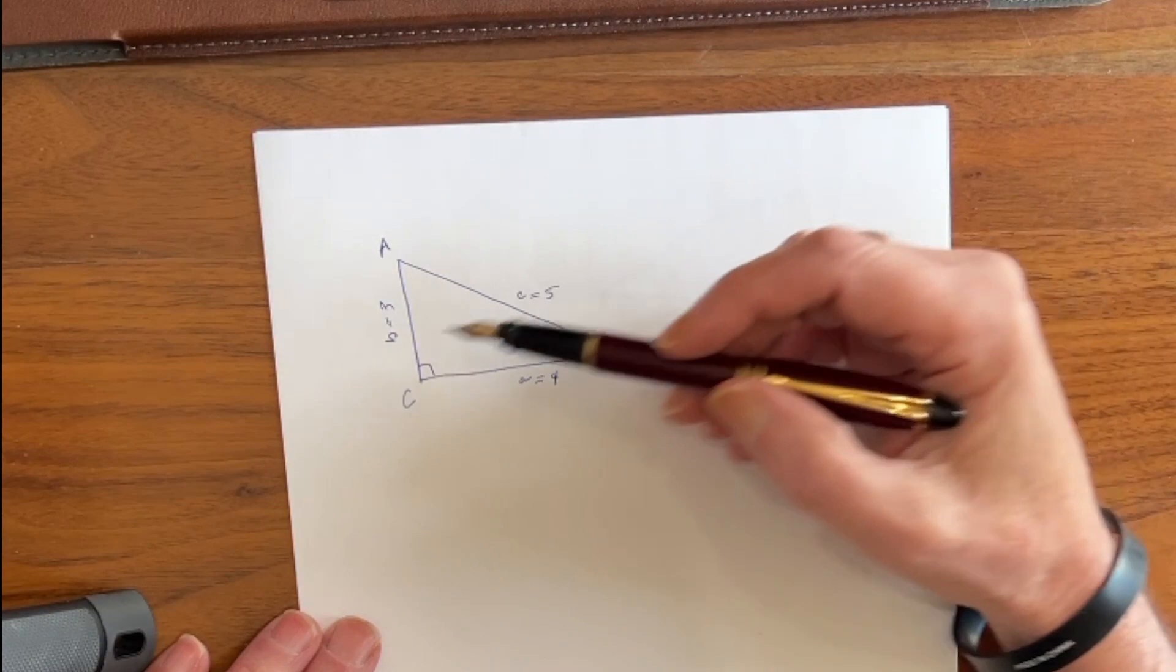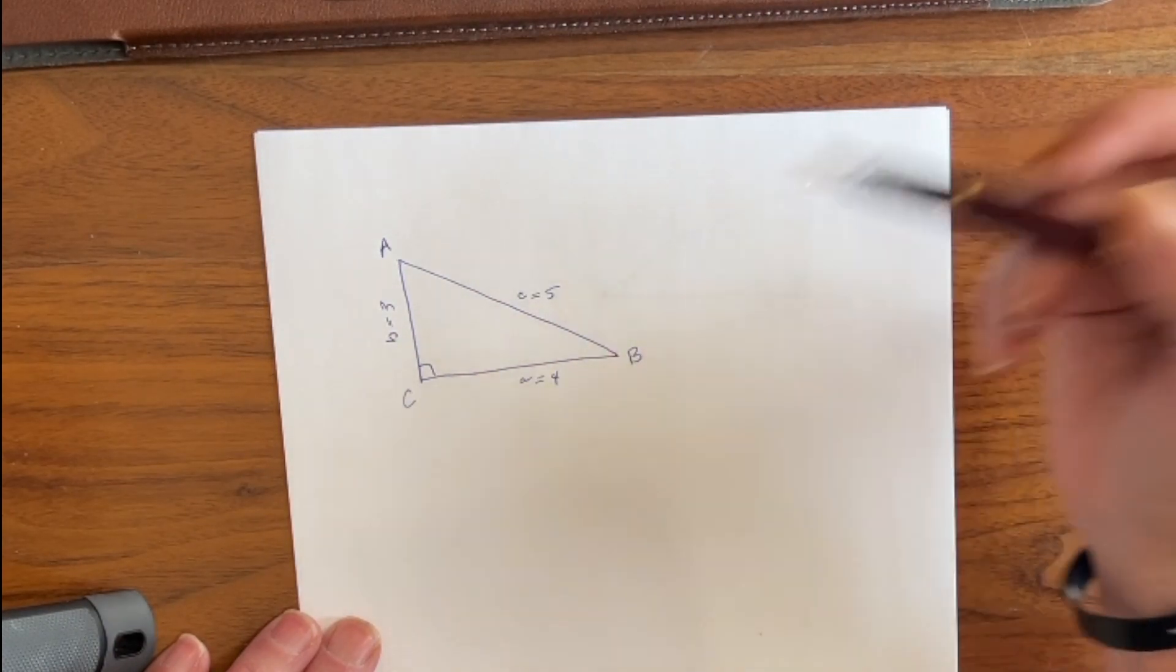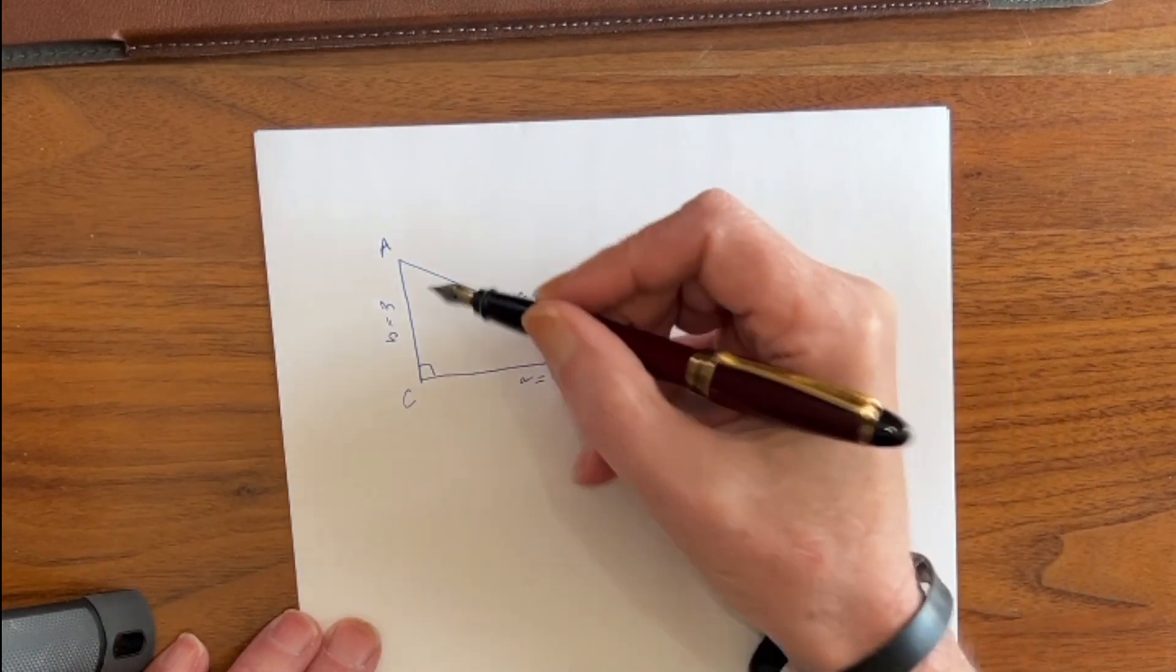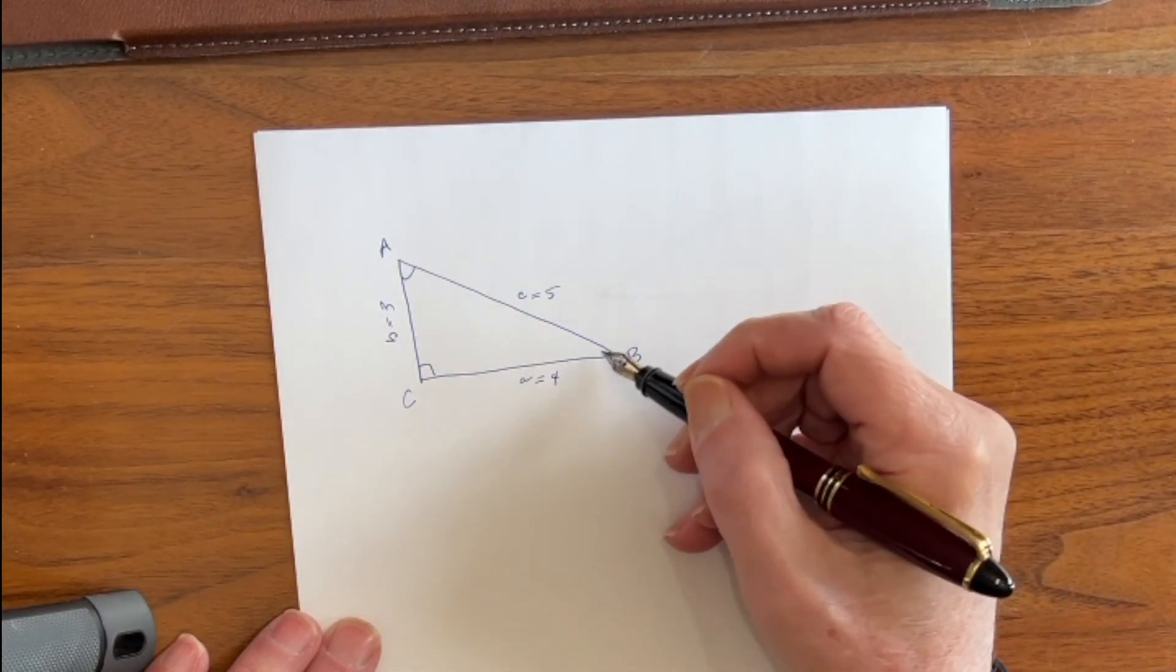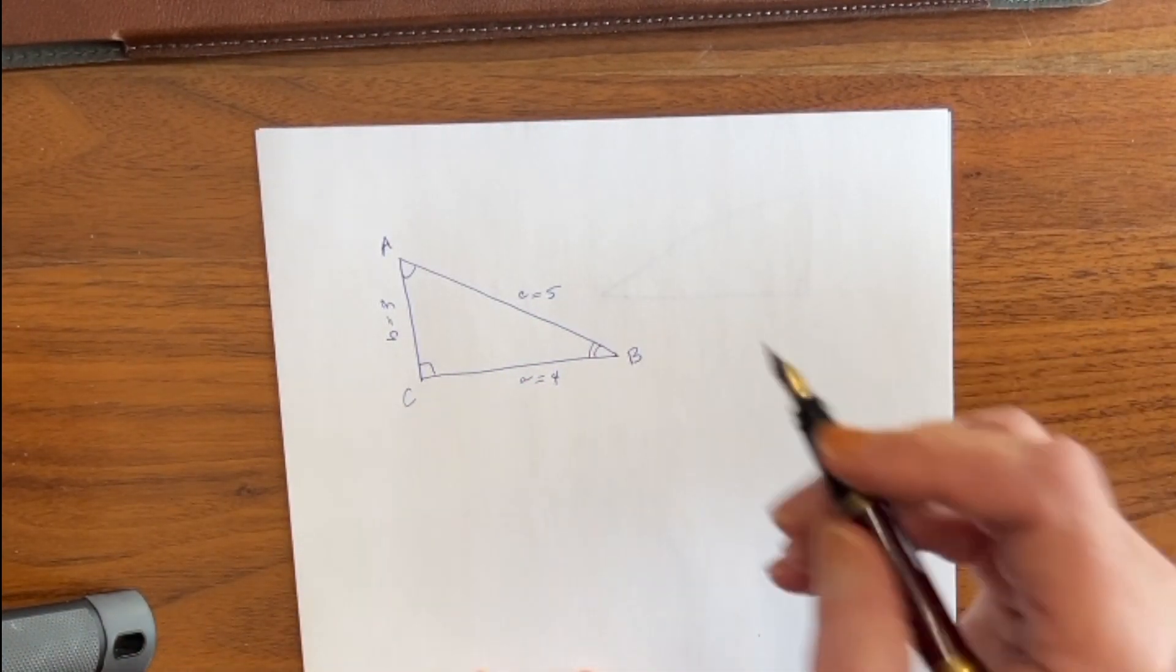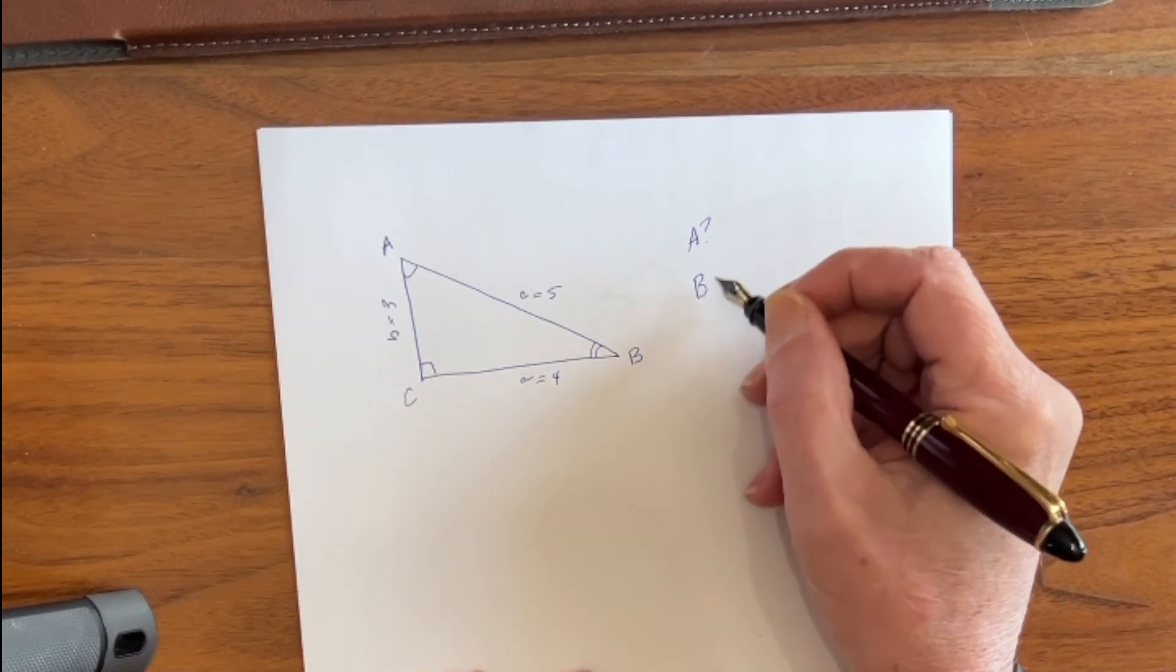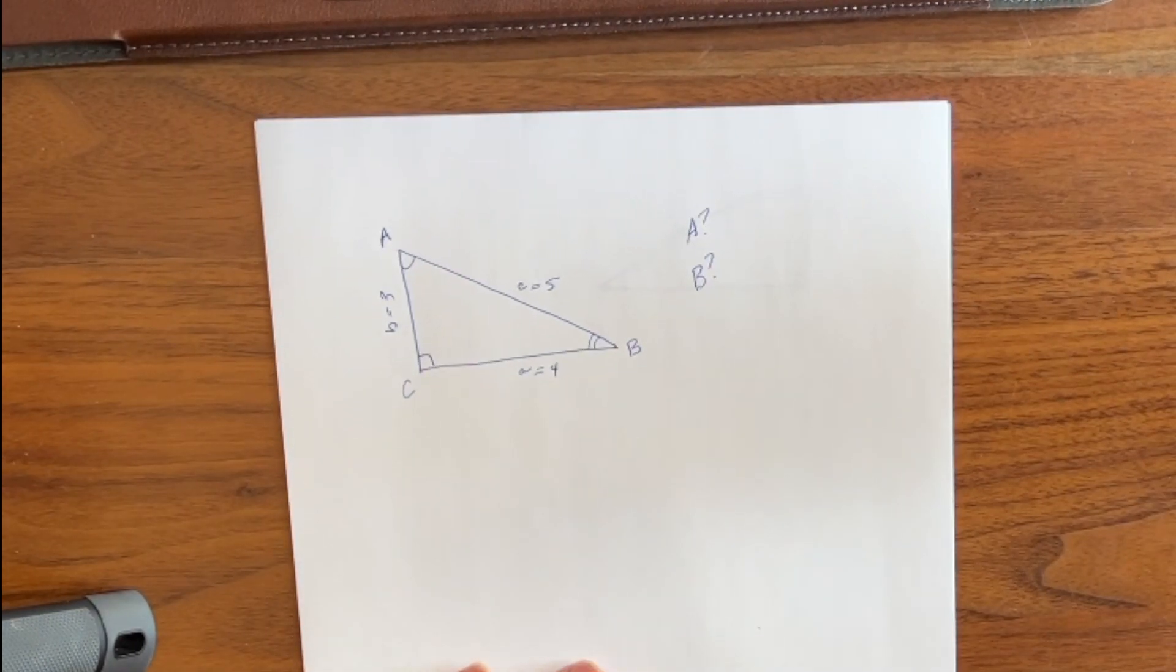Now let's go over a couple of things on paper first. Here's an old friend of ours, a 3, 4, 5 right triangle. Here is the right angle, and we have two angles up here, angle A and angle B. Now the question is, what is angle A, and what is angle B? Well let's see how to figure that out.